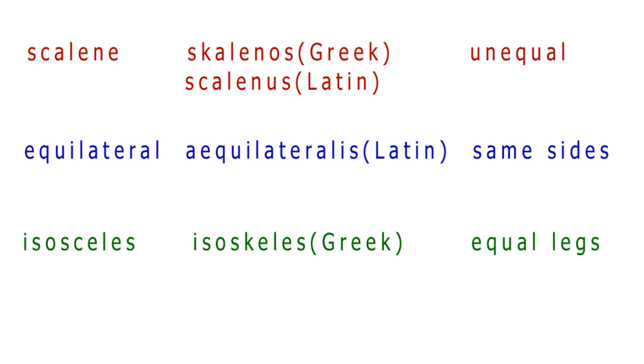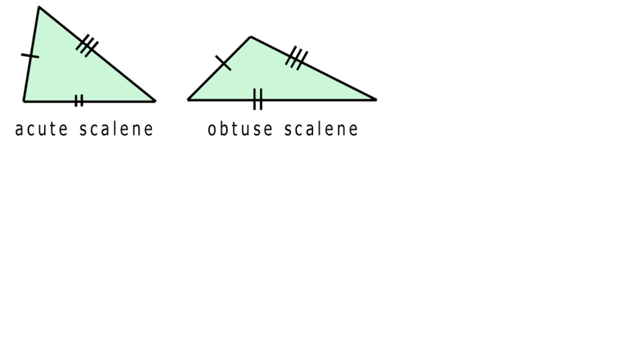Now you're ahead of the game and probably one up on your maths teacher. Now these two groupings of triangles are not the full story. You can merge both systems to get a more accurate picture. You can have an acute scalene and an obtuse scalene.